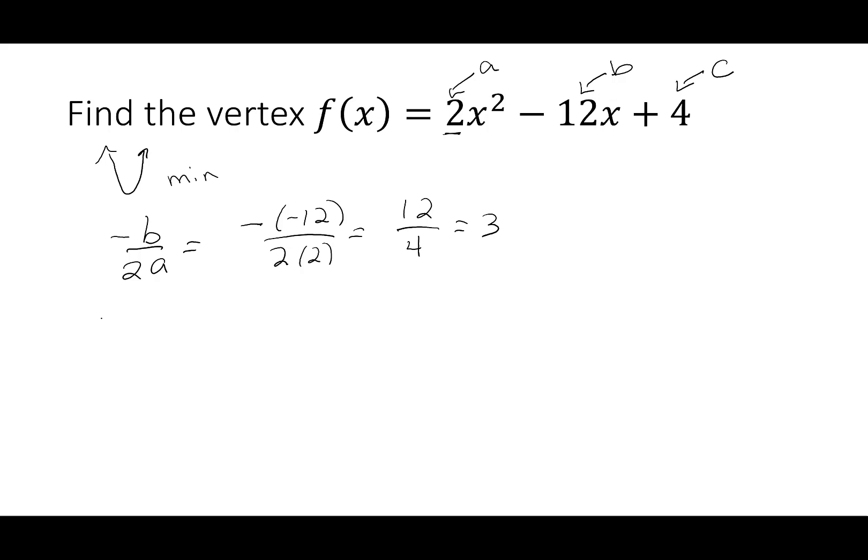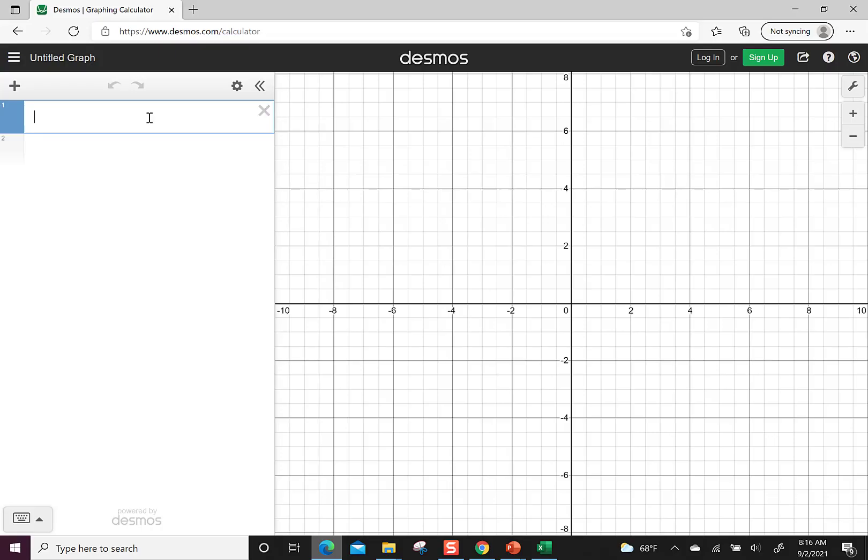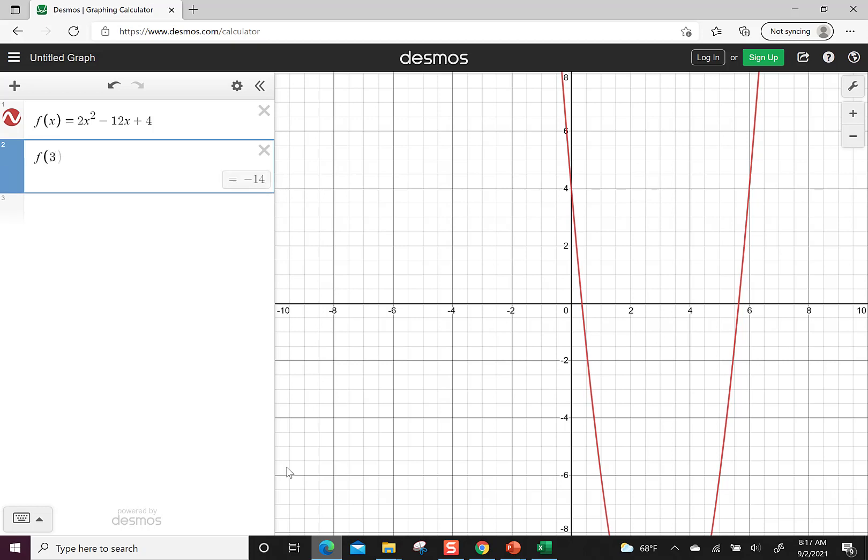Where I will grab the calculator, though, is to find the y value, because I need to plug this 3 back into the function. You could plug it in: 2 times 3 squared minus 12 times 3 plus 4. I'm going to let Desmos do that for me. So Desmos, I'm going to put in my function f(x) = 2x² - 12x + 4. Notice that I did put this in as f(x). That's important. I didn't want to do y equals. I want to do f(x) equals. That way I can make it evaluate by going f(3). And it tells me that the y value is -14.